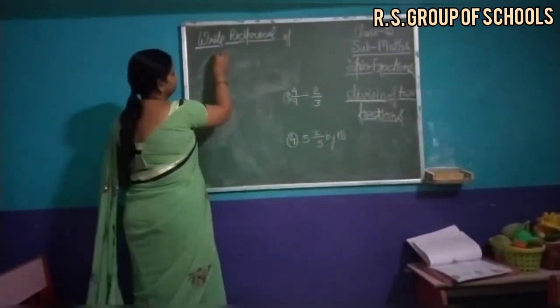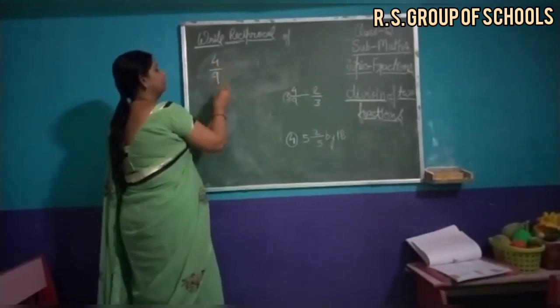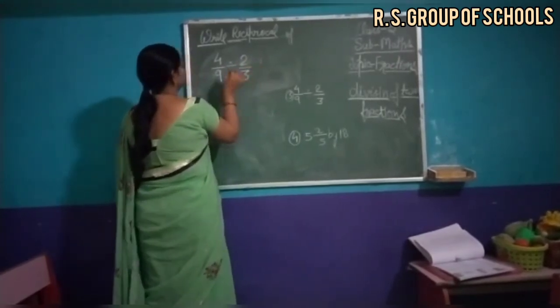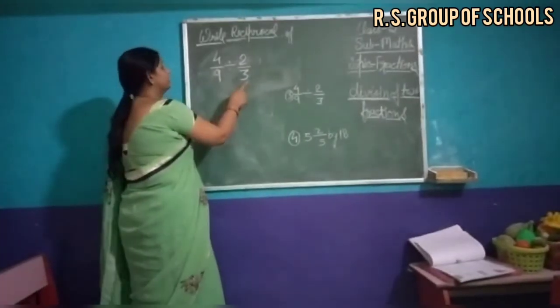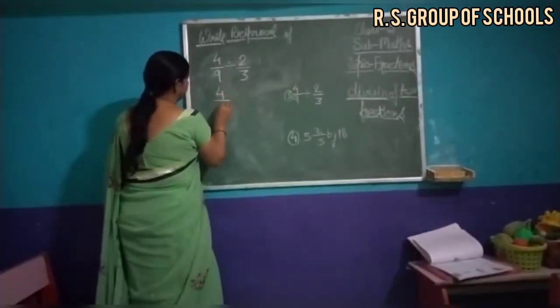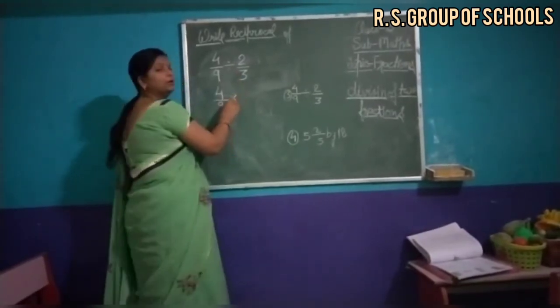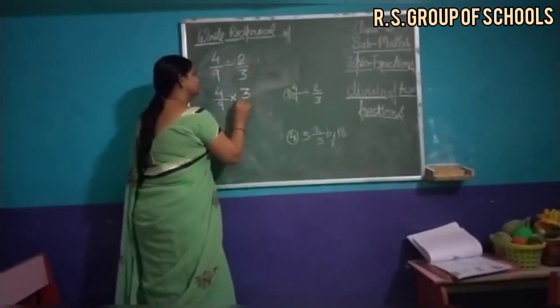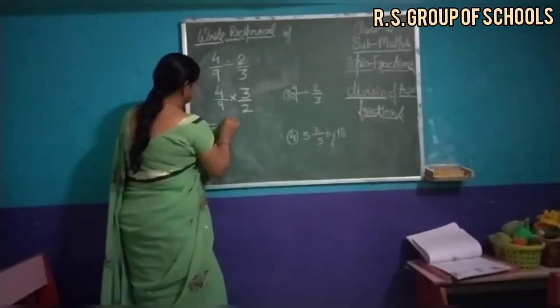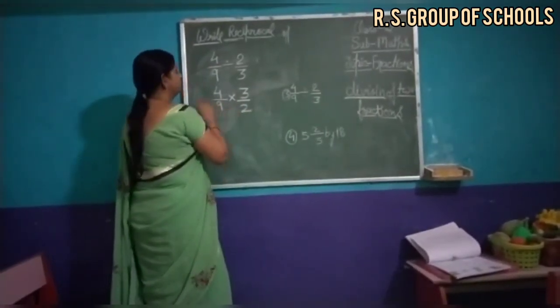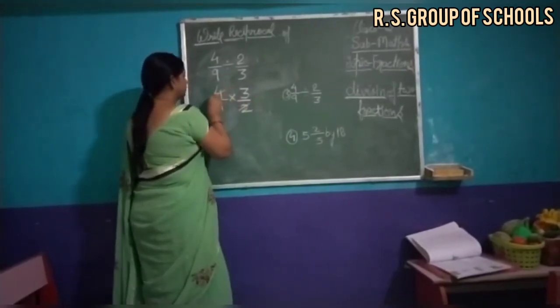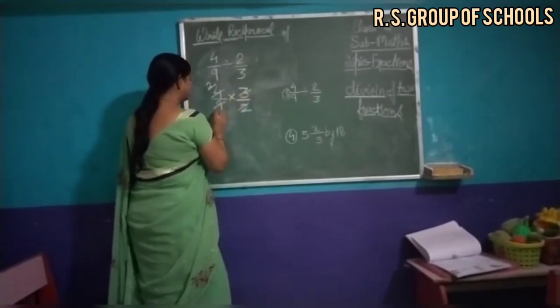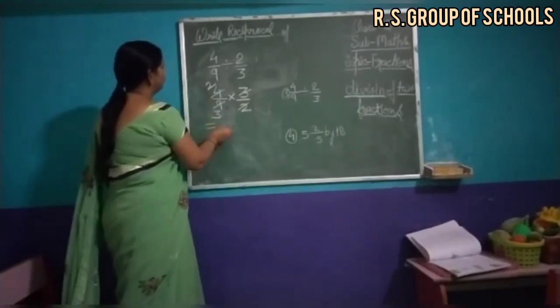And the next one, 4 upon 9 divide का sign दिया हुआ 2 upon 3. Right side की digit का sign change कर देंगे and divide का sign multiply के sign में change हो जाएगा and fraction क्या हो जाएगा 3 upon 2. We can cut this, 4 and 2, answer is 2 upon 3.